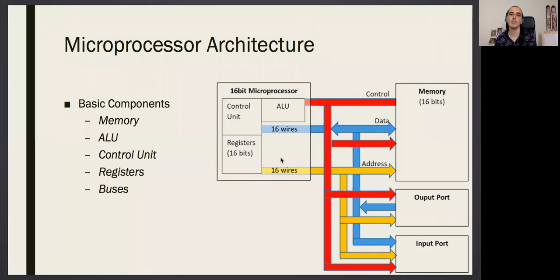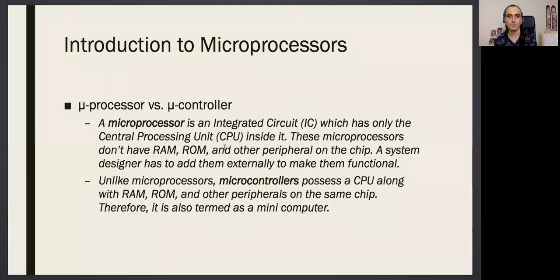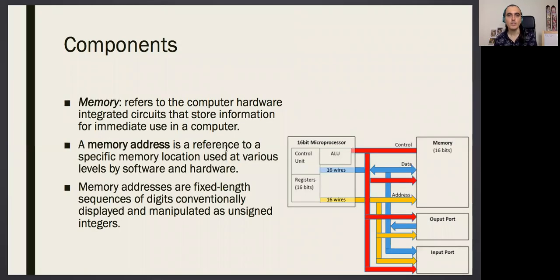Everything should be connected. If you want to make an operation on some data — say there's a number here and a number there and you want to sum them using the computing unit — they need to be connected. These connections are called buses. Now I'm going to talk about each component one by one.